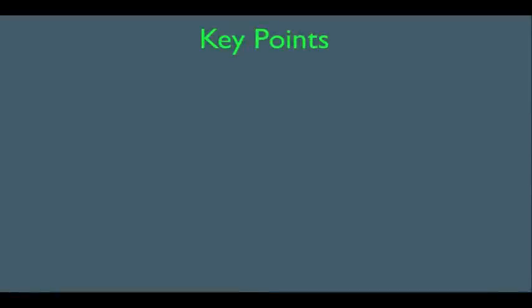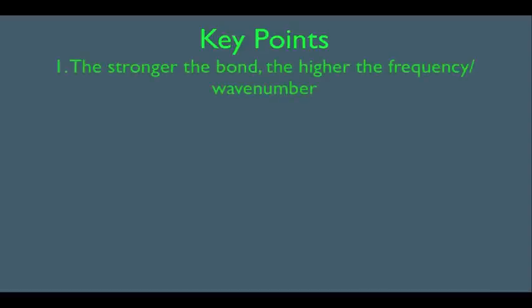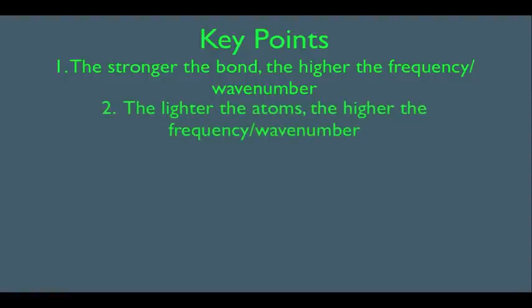In this online lecture, we're going to discuss the relationship between wavenumbers and the types of bonds giving rise to those wavenumbers. Number one, the stronger the bond, the higher the frequency or wavenumber. Number two, the lighter the atoms, the higher the frequency or wavenumber. Higher frequency means higher frequency of bond vibration, which gives a higher wavenumber on the IR spectrum.